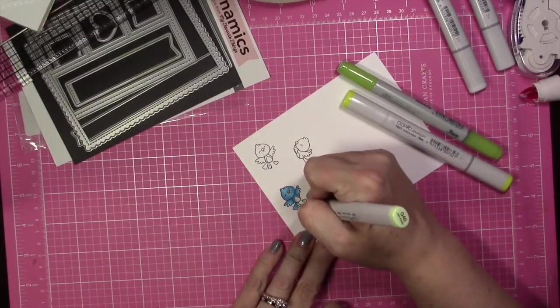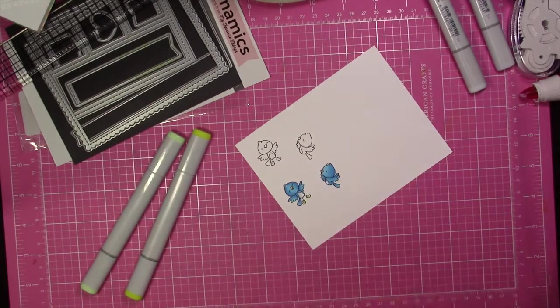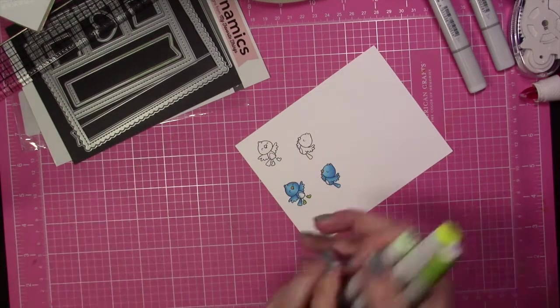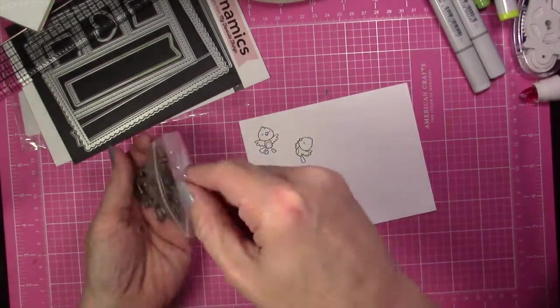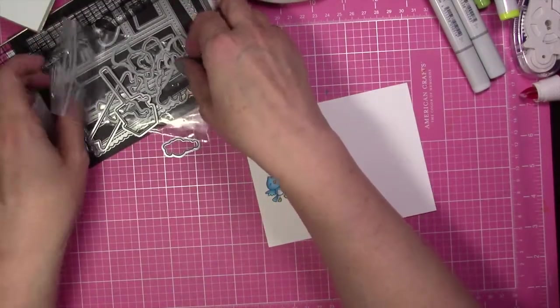I'm going to color in the little booties there on the one bird, and then I'm going to run that through my Big Shot using the coordinating dies. Your Next Stamp is new to the MarkerPop store. Unfortunately, we don't carry the dies in the store, but the stamp set is available.